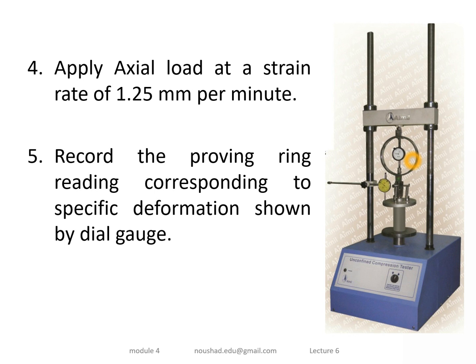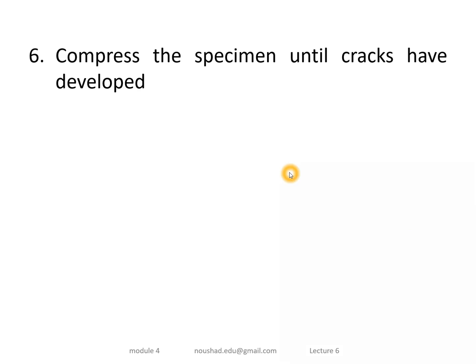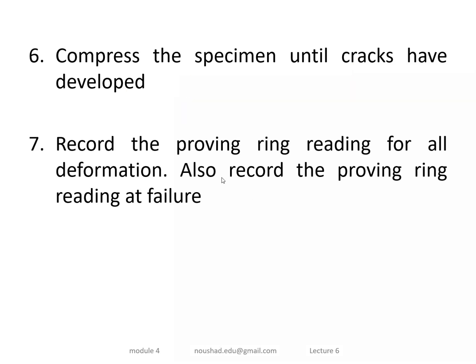For example, one deflection reading may be 2 mm with a corresponding load. We continue loading until the maximum load is reached. We compress the specimen until a crack develops and failure occurs. The failure of the soil sample is identified, for instance, when a crack appears on the specimen surface.